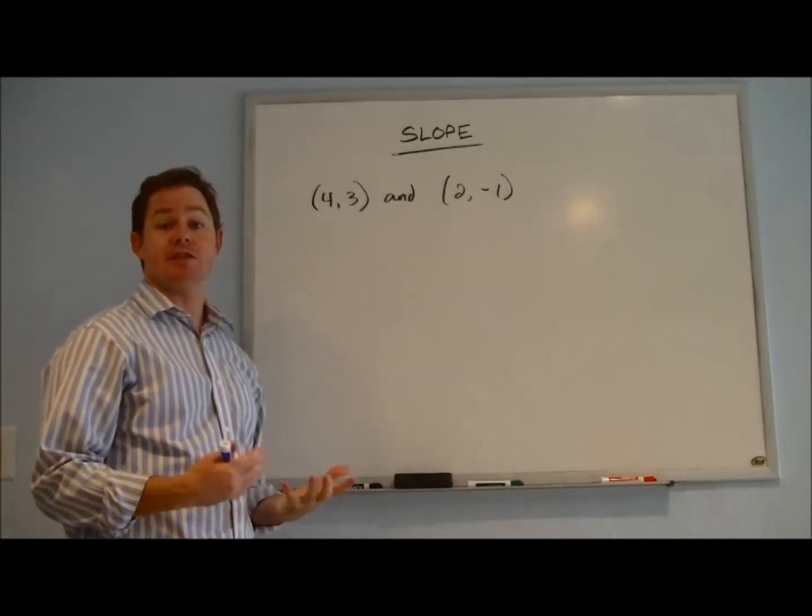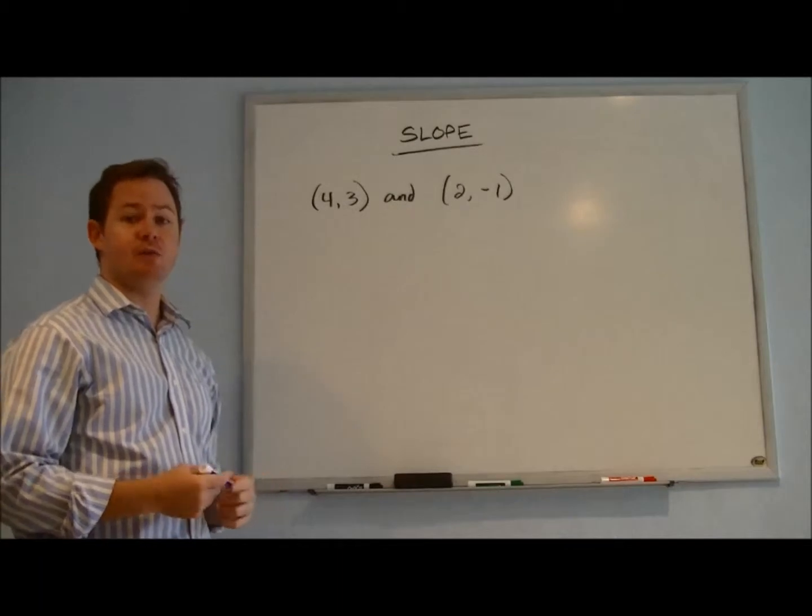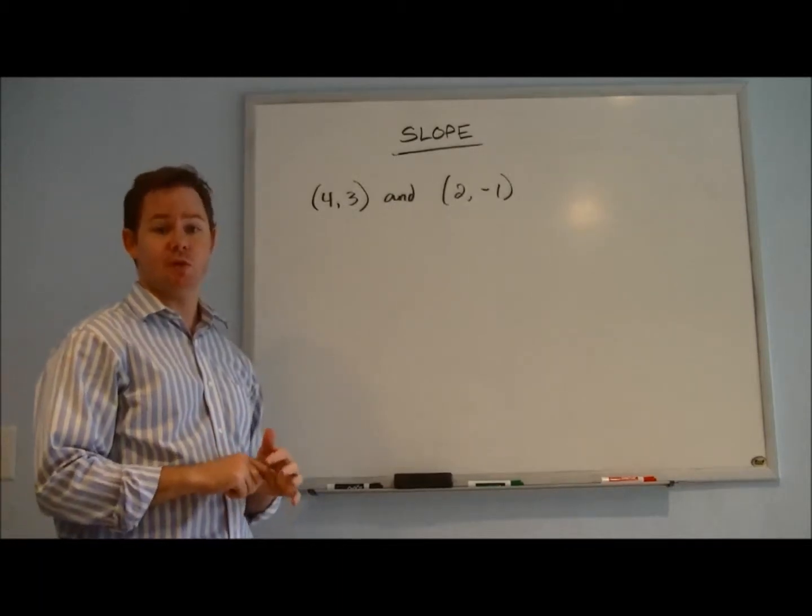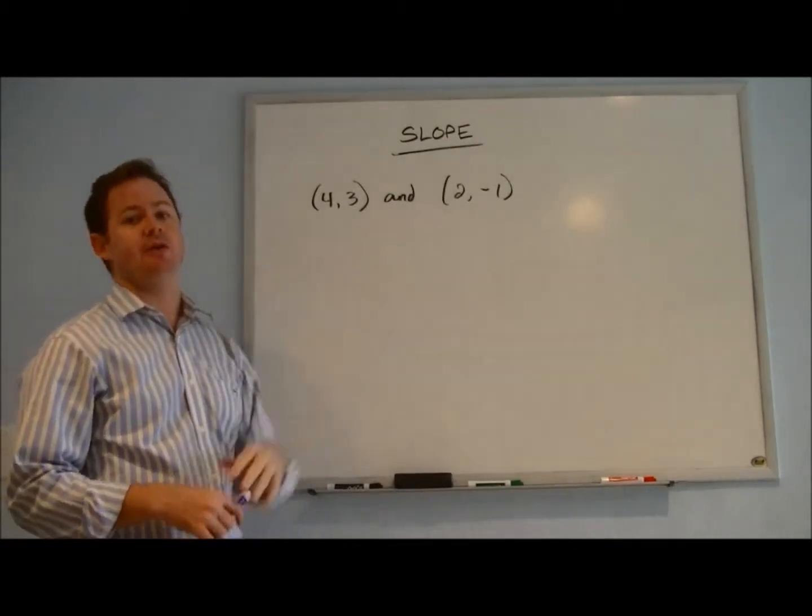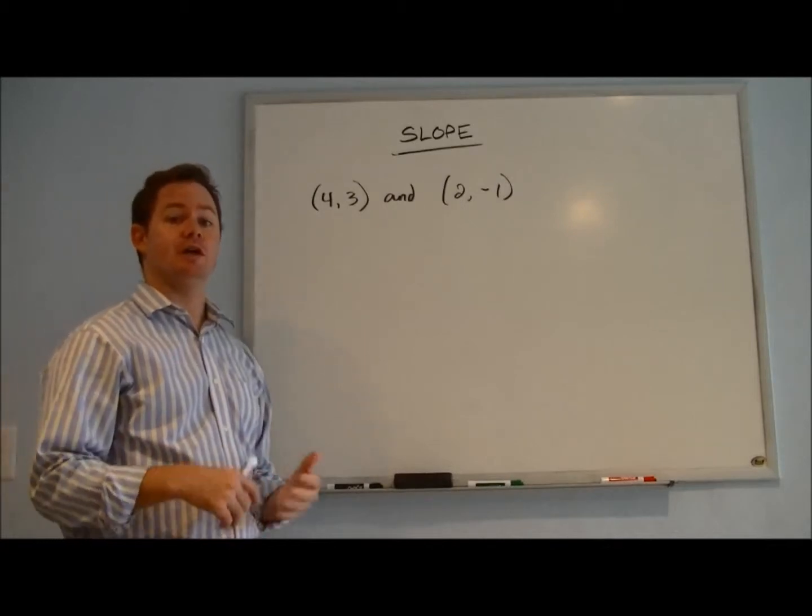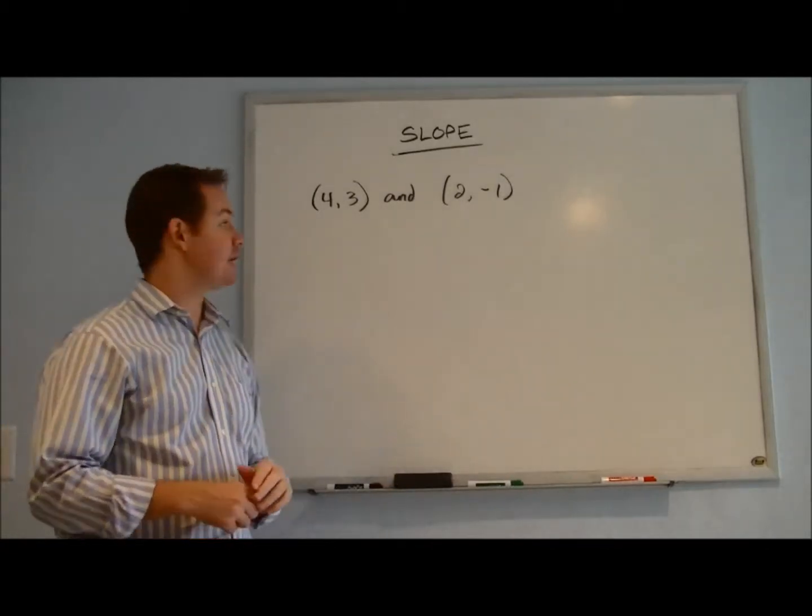So slope basically means the steepness of a line. If you walk up a hill with a steep slope, that means that it's a very steep hill. If you walk up a hill with a smaller slope, that means it's a little bit easier to climb.